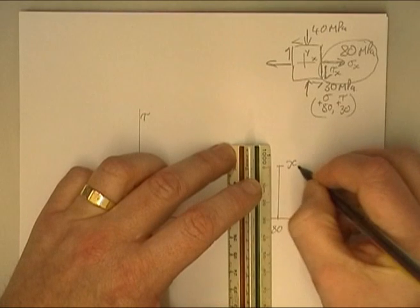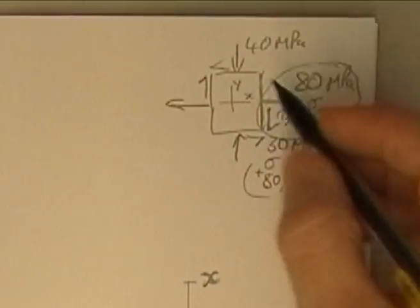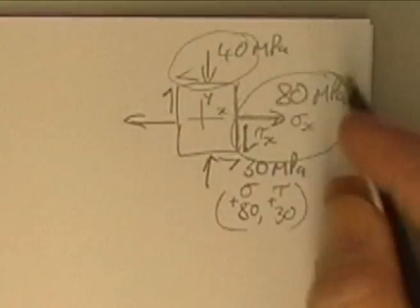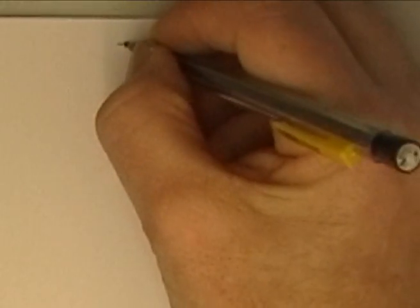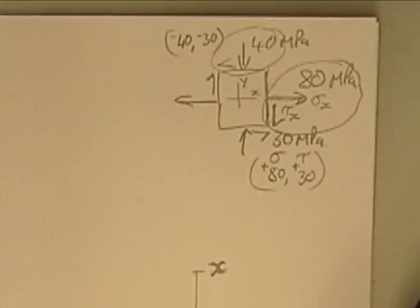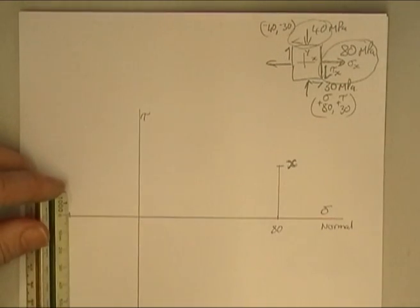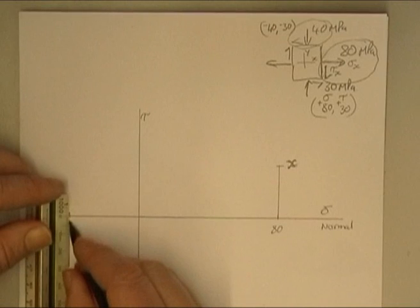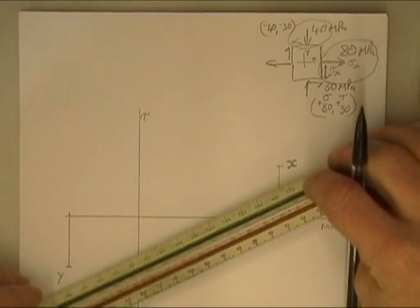Label that point x — it's very important that you label that point. My y stress will have a compressive stress of minus 40 and a shear of minus 30. So those are my two points. We go to minus 40 and minus 30, and that's my y point. Join the two together.